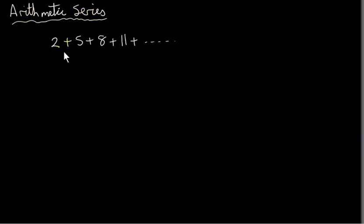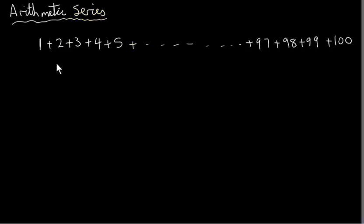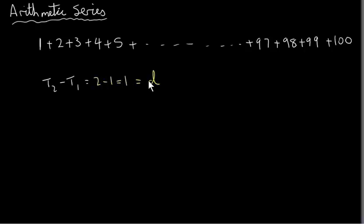An arithmetic series is just an arithmetic sequence where we simply add all the terms together. So when we're talking about a series, it means we're summing the terms of our sequence. Suppose we have this arithmetic series. It's arithmetic because if we take any term and subtract the previous term, we get a constant. So T2 minus T1 — T2 is 2, T1 is 1 — we get 1. So the difference d is 1. If I take the fifth term T5 and subtract the fourth term: T5 is 5, T4 is 4, we get 1 as well. So there's a constant difference — this is arithmetic.